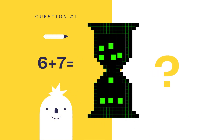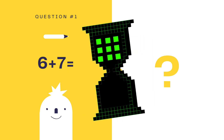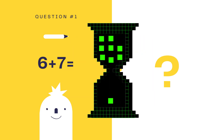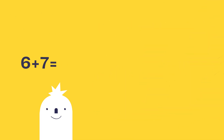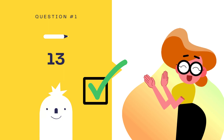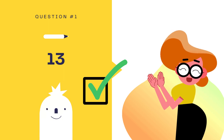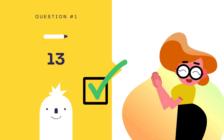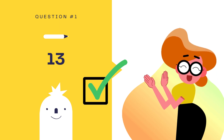Look at the question: 6 plus 7. Count now. Let's check the answer. The answer is 13. Well done if you get the answer correctly.